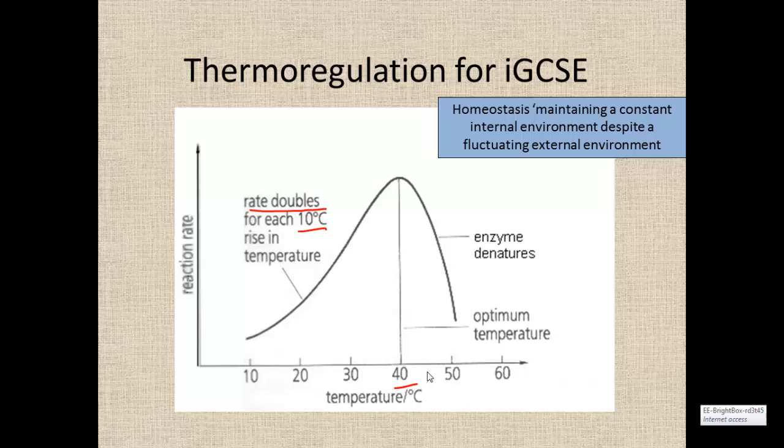But above a certain temperature, the optimum temperature as it's known, enzymes begin to denature. They're being slung around the place so quickly and bumping into too much that their active site changes shape, and therefore the enzyme denatures and it won't do its job anymore. And so it's very important to keep your body temperature at the optimum temperature for your enzymes.